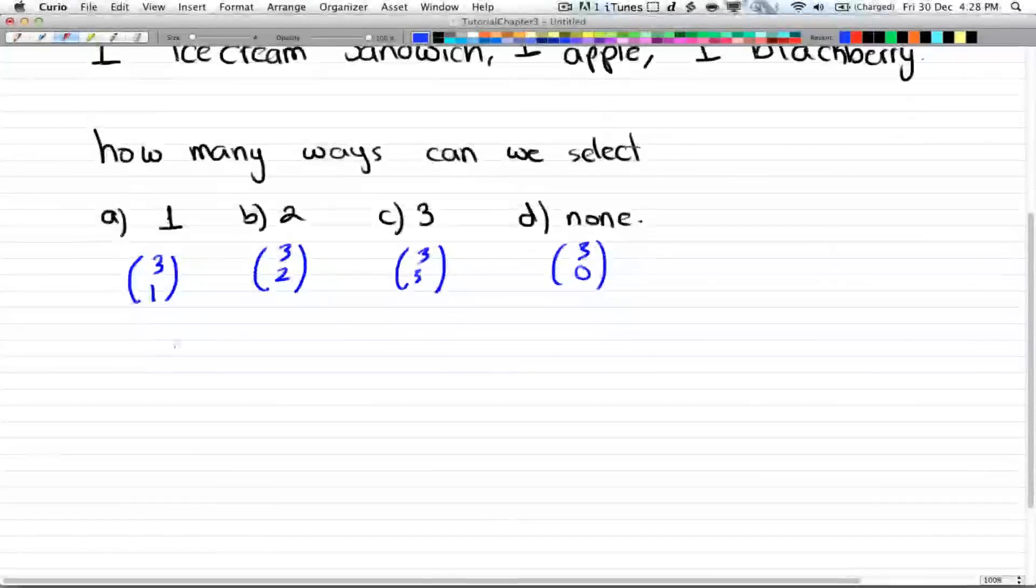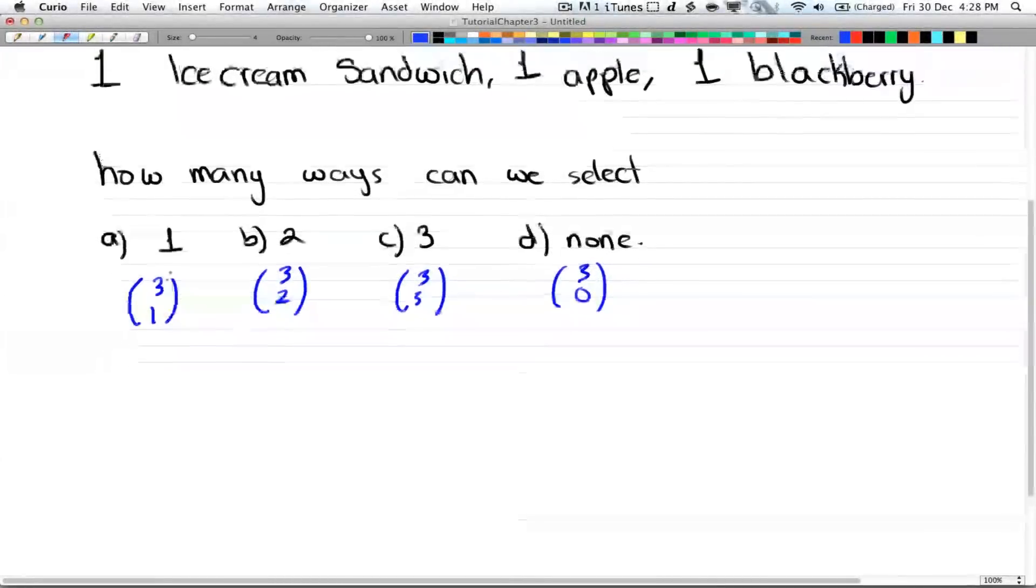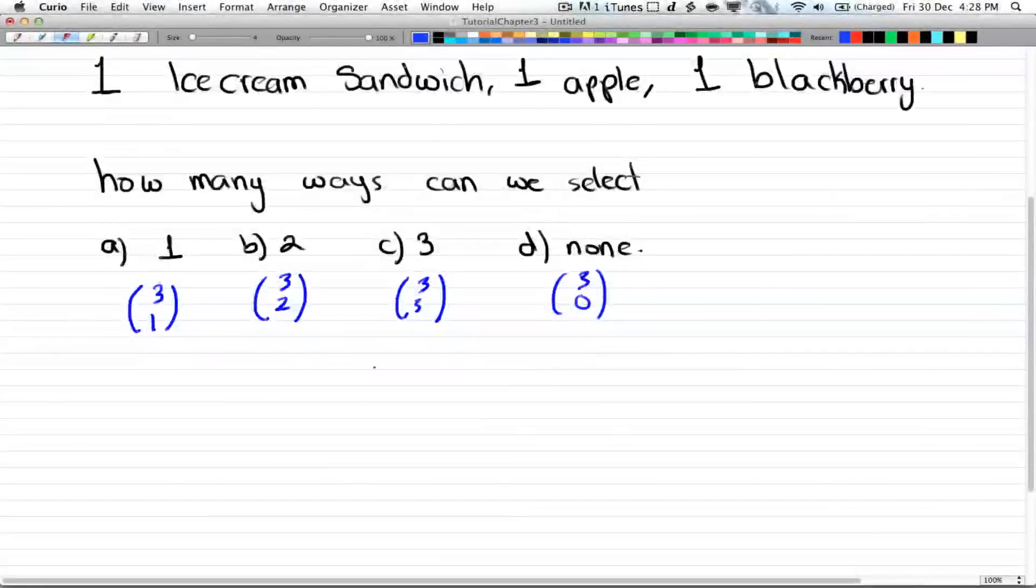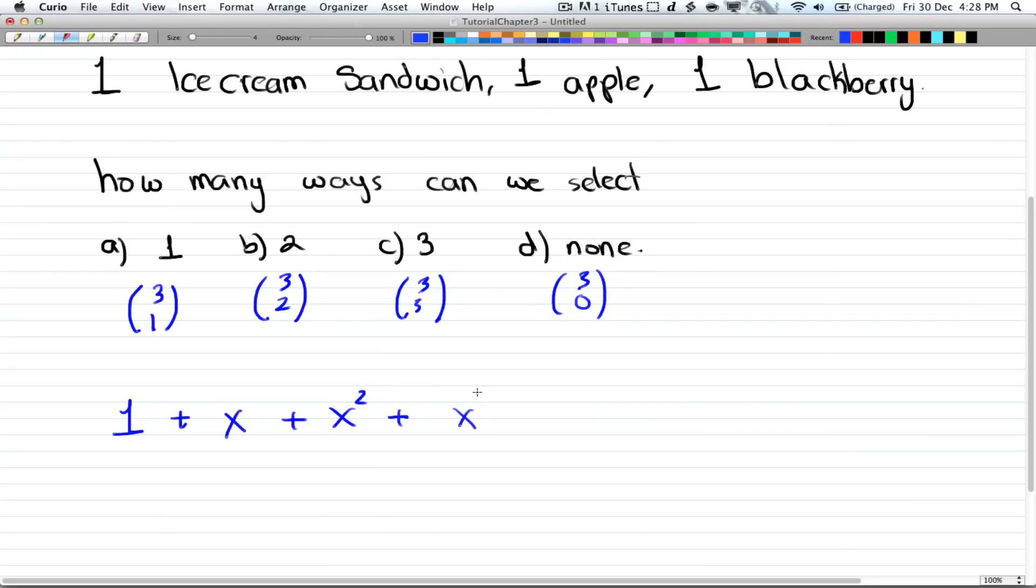So the way we do generating functions is, the way I like to think about it is it's a yes or no kind of question. So a one denotes a no, and an x denotes one, x squared denotes two, x cubed denotes three, and so on and so forth.